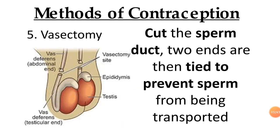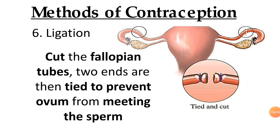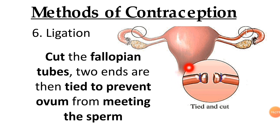Number five is vasectomy — the sperm duct is cut. The doctor will cut the sperm duct so that the two ends are tied to prevent the sperm from being transported. Number six is ligation — the fallopian tube is cut. Both sides of the fallopian tube are cut and then tied to prevent the ovum from meeting the sperm. So if there is intercourse and sperm enters the vagina, the sperm cannot meet the ovum.